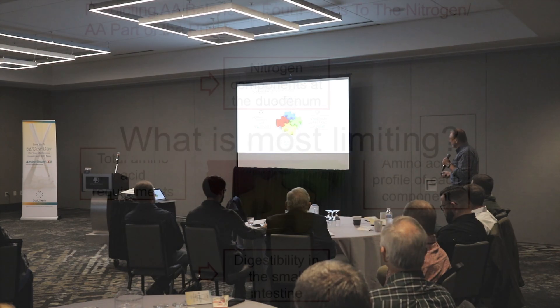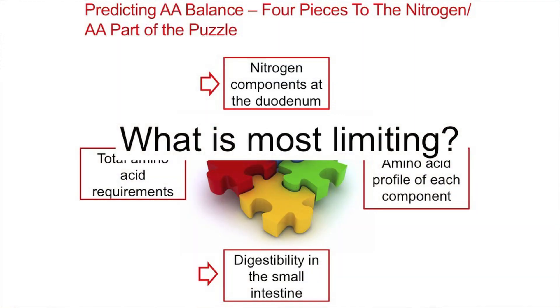We need to know the amino acid profile of each component, and this could be its own talk. In the last couple of years — the swine folks, the poultry folks figured this out a while ago — but in the literature: how many hours do we hydrolyze feeds for amino acids? It's 21. What if I told you that five of the amino acids don't come out until about 168 hours?